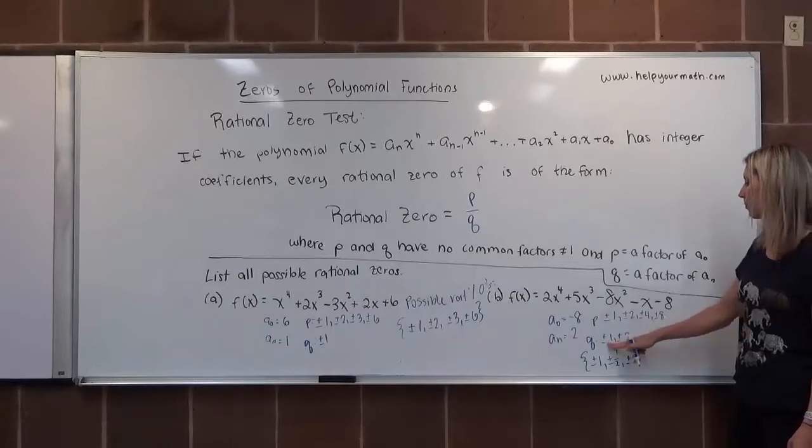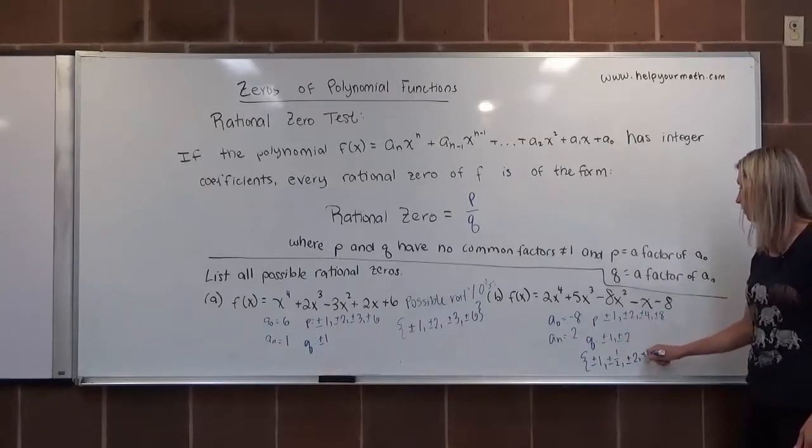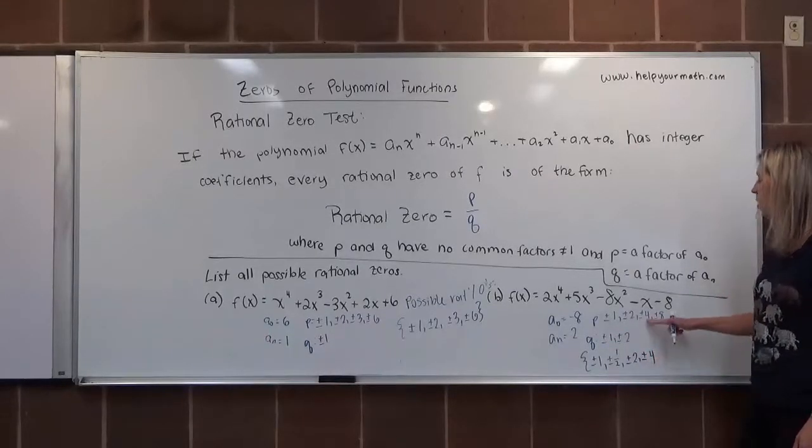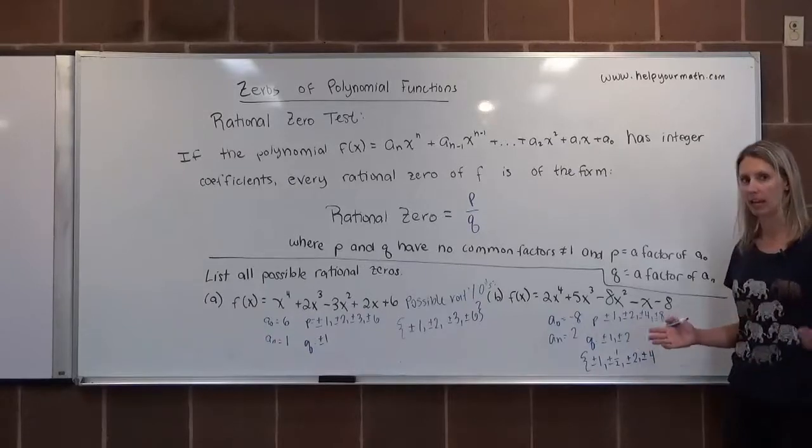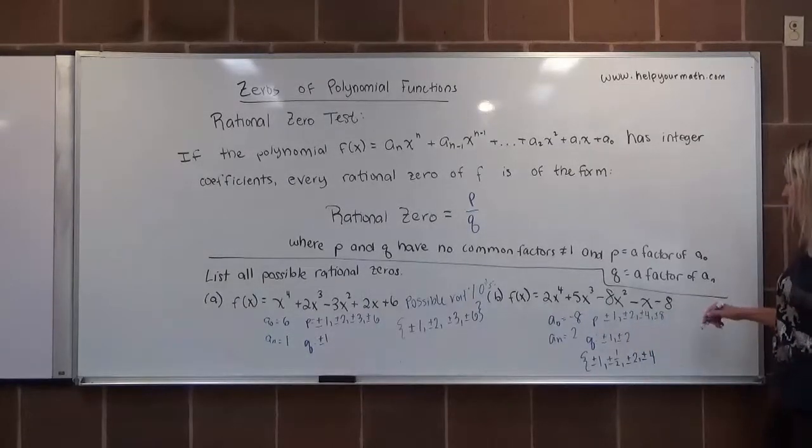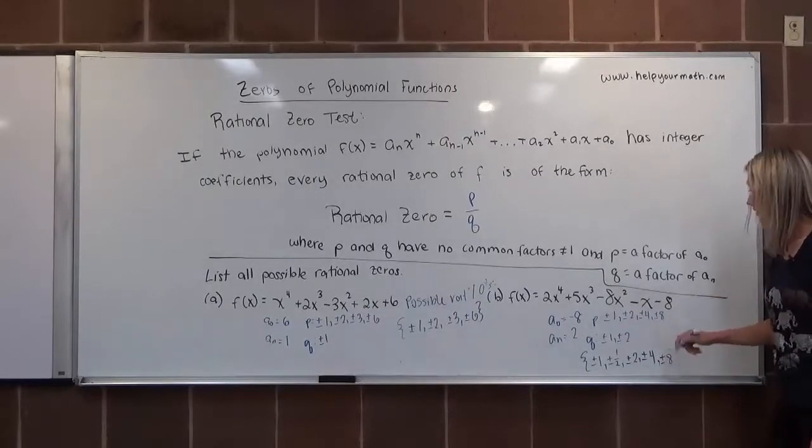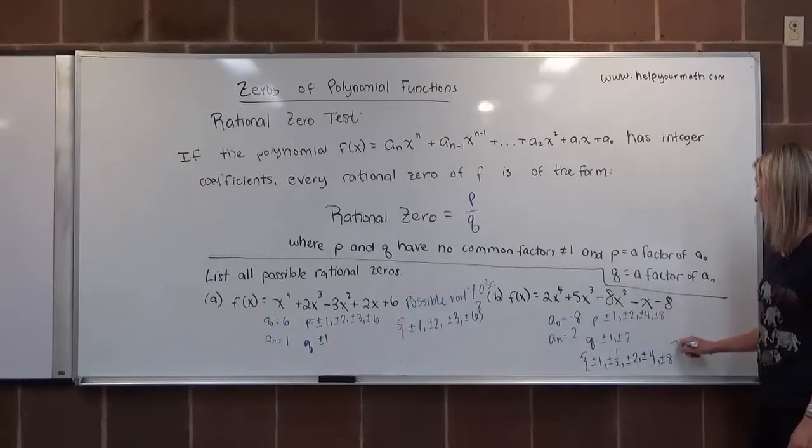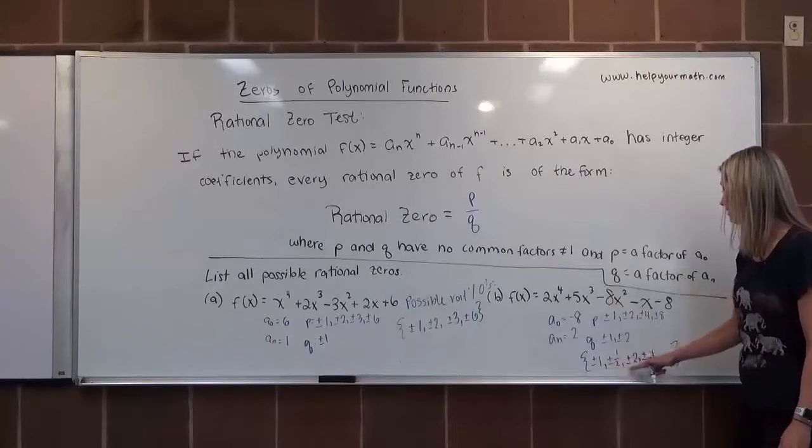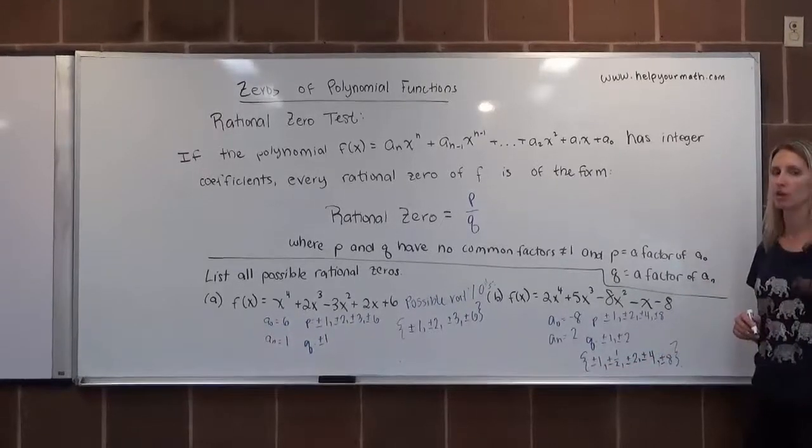We're going to go to 4. Positive or negative 4 divided by positive or negative 1 will be positive or negative 4. We can skip the 4 and 2 because they have a common factor besides 1. And let's go to 8. Positive or negative 8 divided by positive or negative 1 will be positive or negative 8. We can skip that as well. So this one has 2, 4, 6, 8, 10 possible rational zeros.